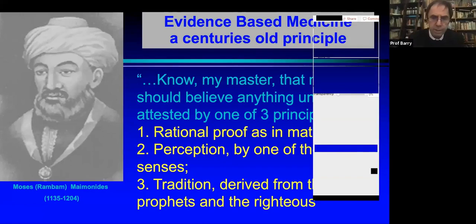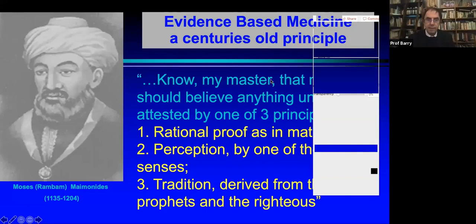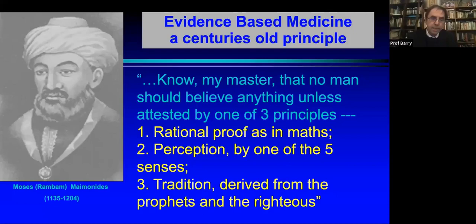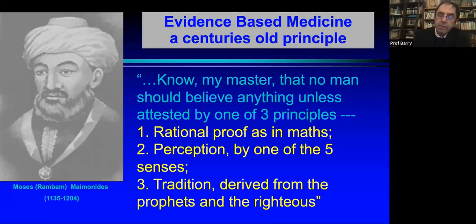Those of you who've been to one of my talks know I always show a slide about one of my heroes, Maimonides. It's a bit tongue-in-cheek that I show it tonight when speaking from healthcare funders, because he said: don't believe anyone unless one of three things — rational proof as in mathematics, perception by one of your five senses, or tradition derived from the prophets and the righteous. A lot of the problems we've had with COVID have been because we haven't really known what to do — we've been taking tradition from prophets and righteous, which is not really hard evidence. As scientists, it behoves us to now start doing trials to get hard evidence. Healthcare providers are always on the other side of Discovery, fighting for them to pay for patients — but that doesn't mean they shouldn't be paying now in life-threatening situations.